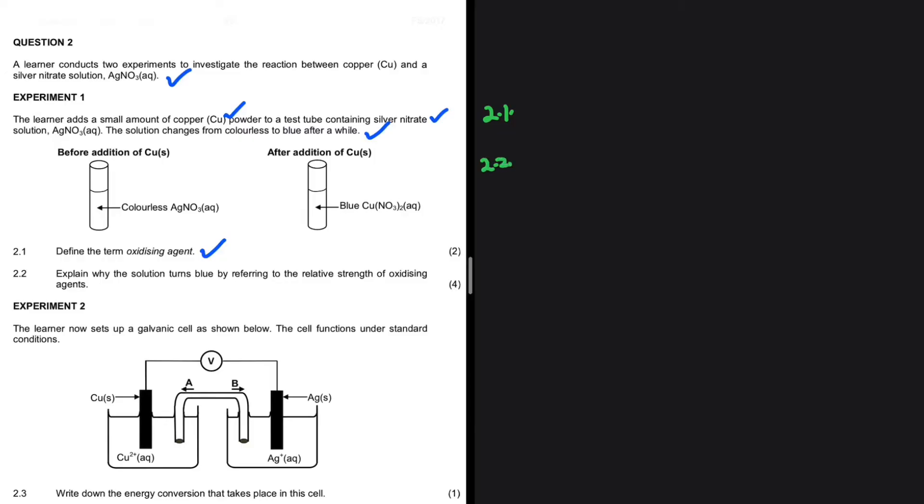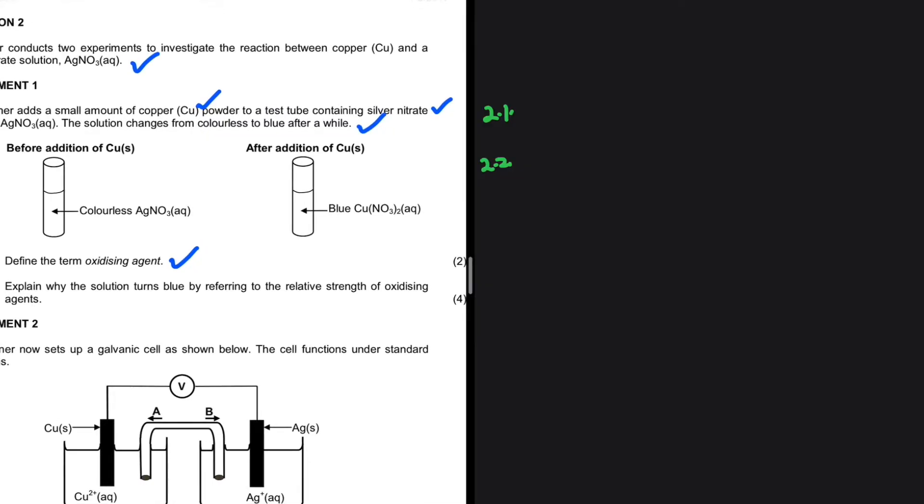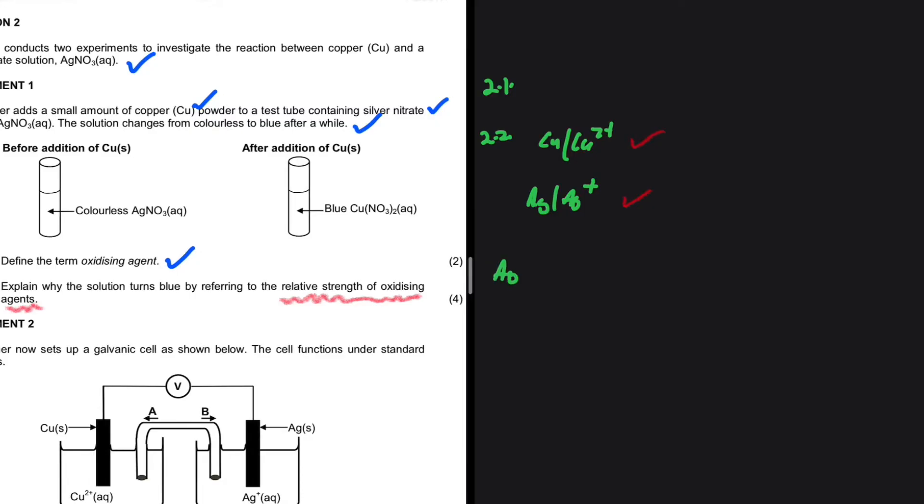Let's take a look at 2.2: explain why the solution turns blue by referring to the relative strength of the oxidizing agents. Let's go ahead and compare copper Cu²⁺ and silver Ag⁺ by referring to the relative strength of the oxidizing agents.